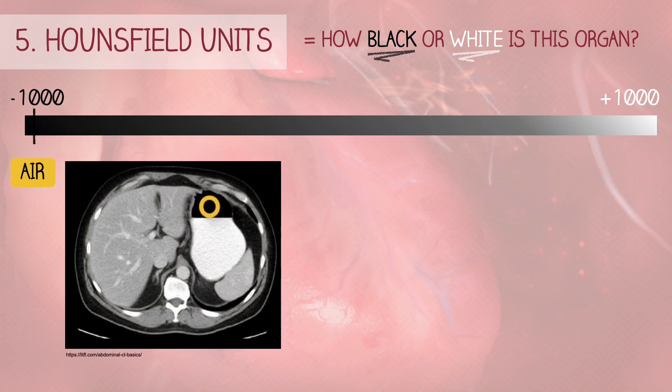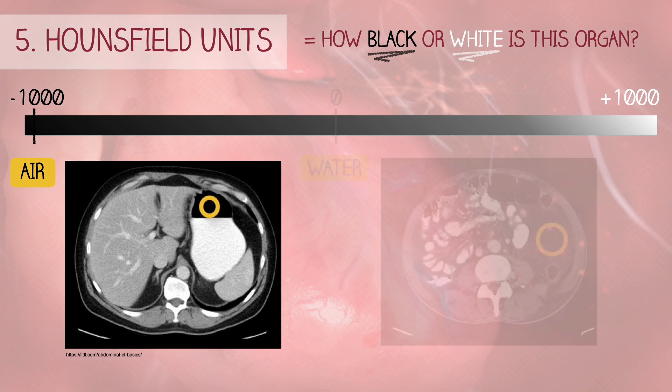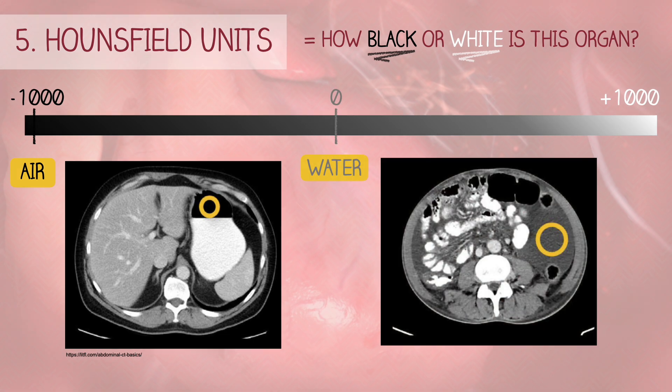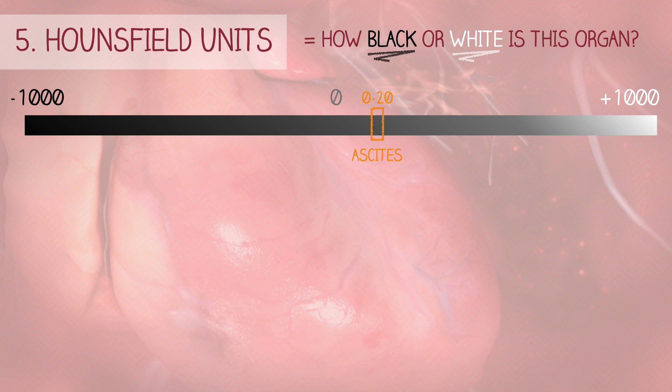By convention, two structures are used to calibrate all other values. Air is minus 1,000 Hounsfield units, and water is 0 Hounsfield units. Since water is the zero point, it helps characterize other fluid types. For instance, ascites typically falls within the range of 0 to 20 Hounsfield units, whereas blood is usually between 30 to 70.